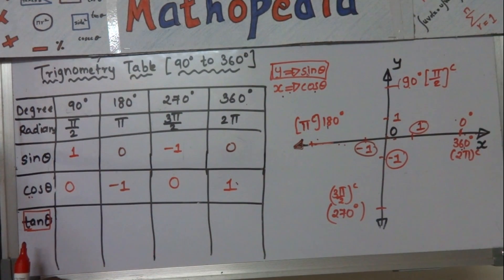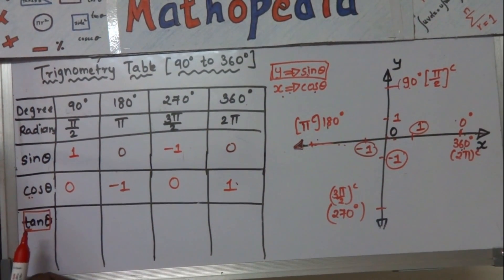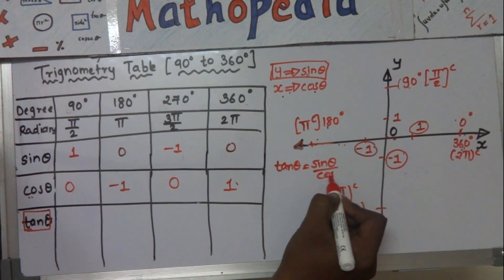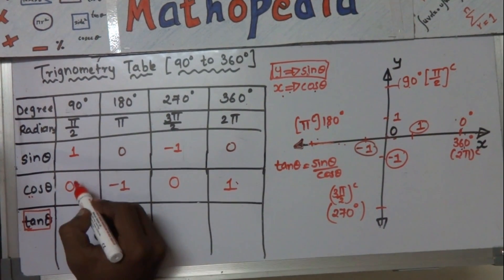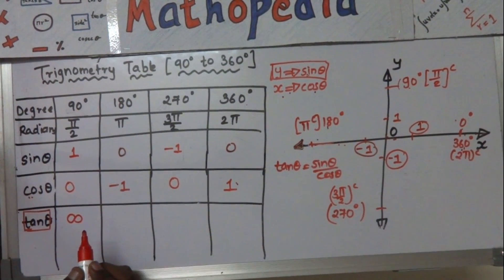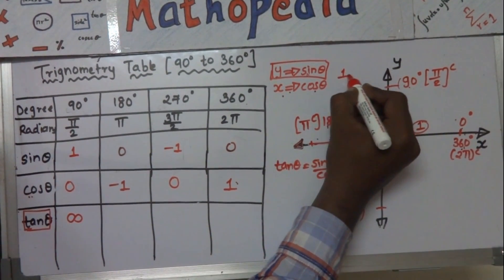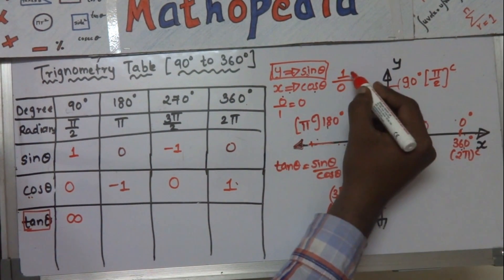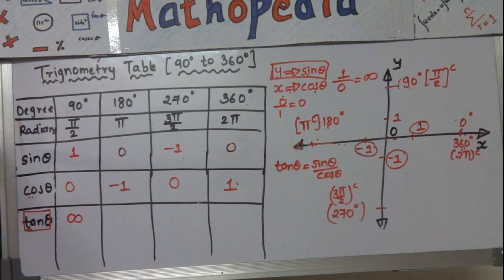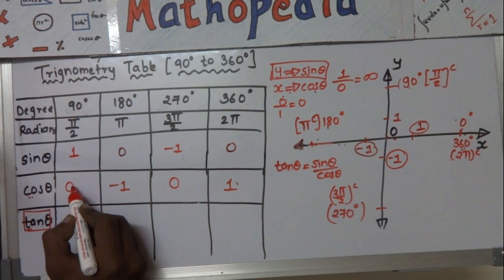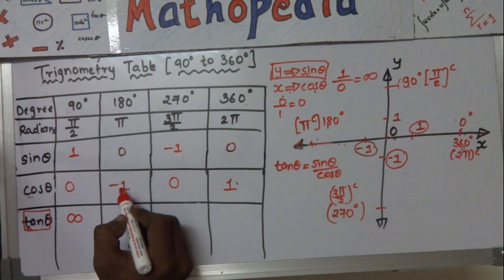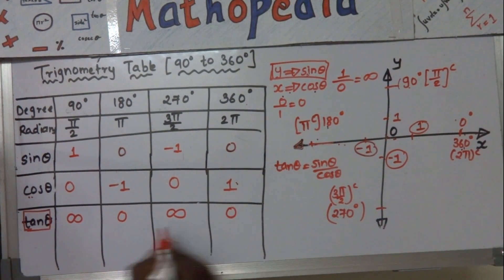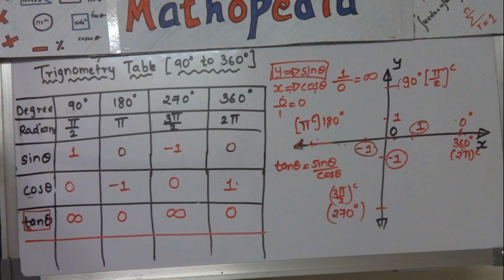For tan theta, just divide the sine and cos values using the formula tan theta equals sine theta upon cos theta. So: tan 90 = 1/0 = infinity; tan 180 = 0/(−1) = 0; tan 270 = −1/0 = infinity; and tan 360 = 0/1 = 0. Remember: if the numerator is 0, the answer is 0, and if the denominator is 0, the answer is infinity.